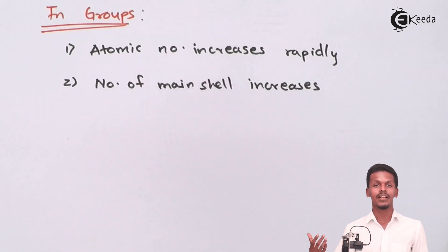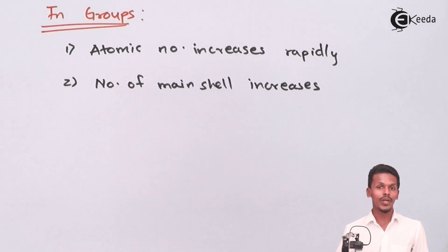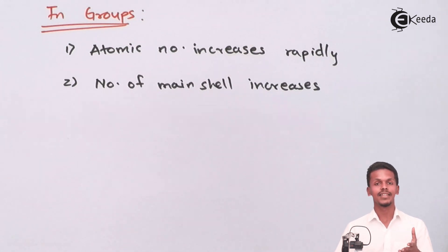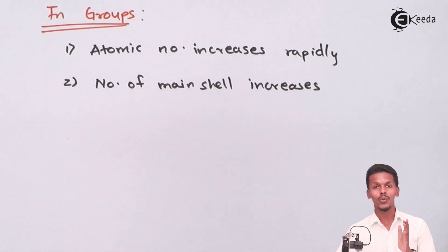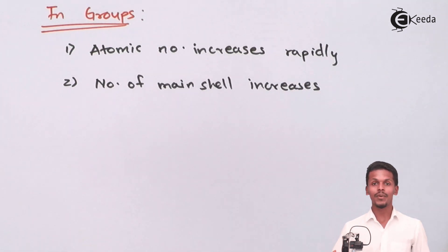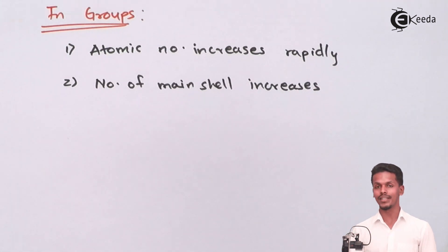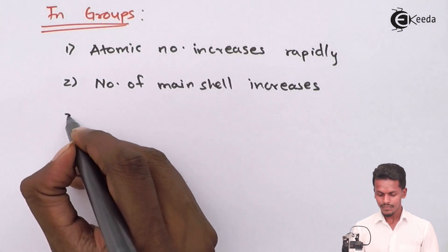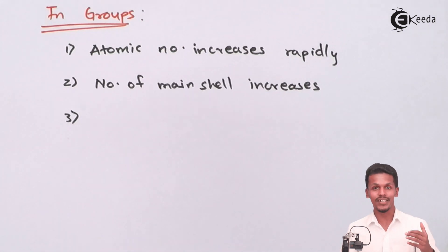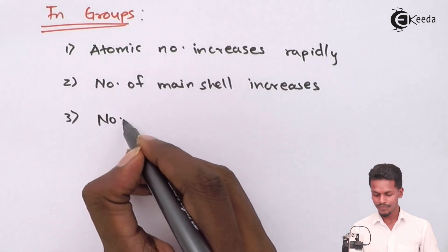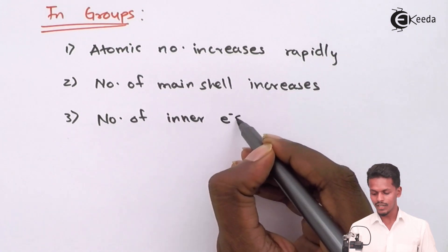For example, lithium has atomic number 3: its configuration is 1s², 2s¹ — so it has 2 shells. Sodium is 1s², 2s², 2p⁶, 3s¹ — so the number of main shells is now 3. Potassium will have yet another extra main shell. So as we move down a group the number of shells goes on increasing, and therefore the number of inner electrons also goes on increasing.